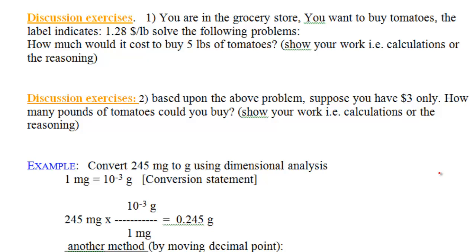For discussion exercise question 1, pause the video, read the question, and try to solve it before continuing. The problem gives you the relation between pounds of tomatoes and price, so the conversion statement is 1 pound equals $1.28. The question asks how much it would cost to buy 5 pounds of tomatoes, so we need to find the cost in dollars given a quantity of 5 pounds.